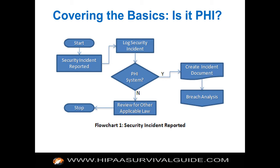First, determine: was it an information system that contained PHI? Here's an example from our framework — a breach notification document of about three or four pages where you document every single breach or attempted breach. Was PHI secured? That should be an easy question to answer. If the answer is yes — PHI was secured — then there's no breach by definition; you take advantage of the safe harbor. Notice, you still document that and complete the incident document stating there was a compromise of our network, but it wasn't a breach because the information was encrypted. Otherwise, if it wasn't secure, you go on to the notification analysis.